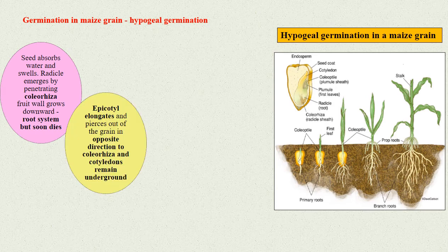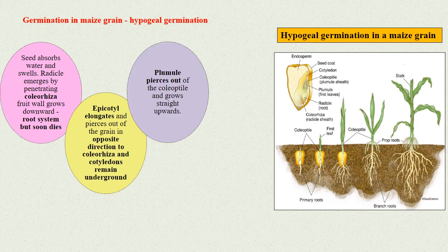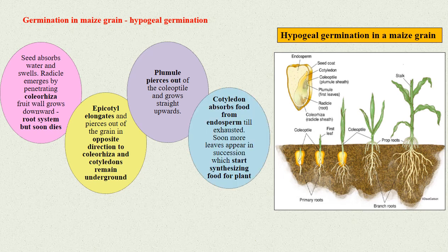The epicotyl elongates and pierces out of the grain in opposite direction to coleorhiza and cotyledons remain underground. The plumule pierces out of the coleoptile and grows straight upwards. The cotyledon absorbs food from the endosperm until it is exhausted.